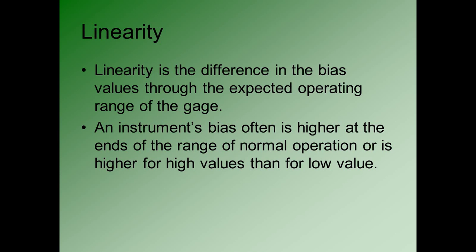On the other hand, if a person weighing 280 pounds gets on that scale, it's very likely to be off in its average value — it may read higher or lower, but it won't perform as well near the end of that range. That's also true on the low side — most bathroom scales are not very effective when measuring light weights like something of 25 pounds. The idea of linearity is that the bias stays the same through the expected operating range of the gauge.